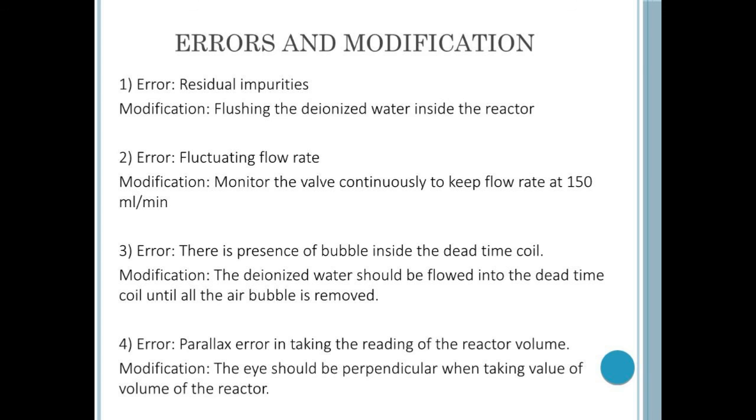There are some errors and modifications that might improve the overall results. The first error is the presence of residual impurities inside the reactor tank. The way to counter this is by flushing the deionized water inside the reactor to remove the impurities. The second error is the fluctuation of flow rate and we can improve this by monitoring the pump continuously to keep the flow rate at 150 ml per minute. The next error is the presence of bubbles inside the dead time coil. Before starting the experiment, the deionized water should be flowed into the dead time coil until all the air bubbles are removed.